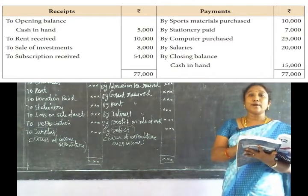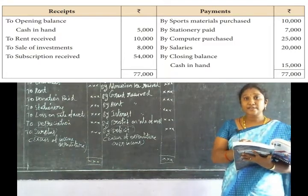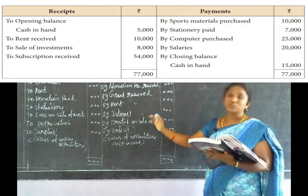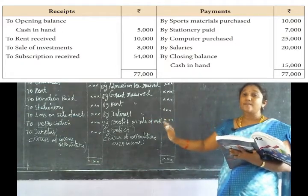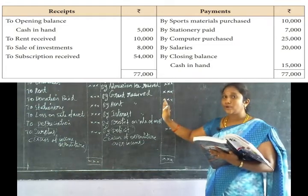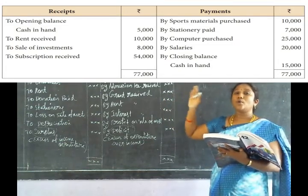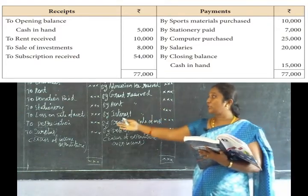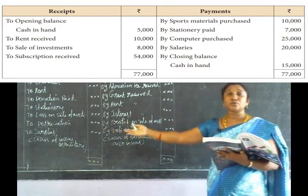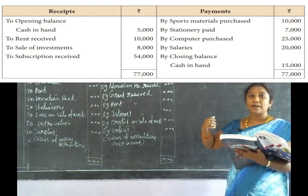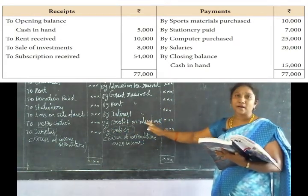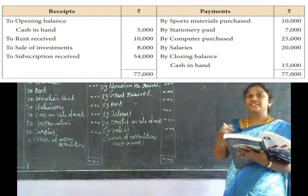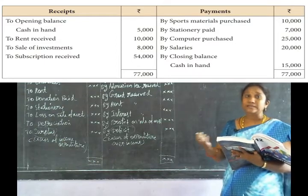The next items are cash items and non-cash items on the debit side and credit side. Then we look at income and expenditure, opening and closing values, and cash items on the debit side and credit side.